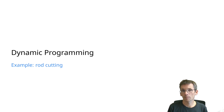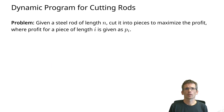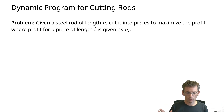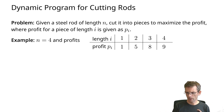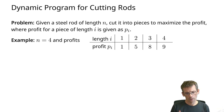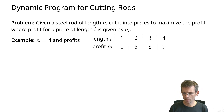I want to show you a simple example for dynamic programming, and that is rod cutting. The problem is: we assume you have a steel rod of a certain integer length n, and you want to cut it into pieces so as to maximize your profit. For that you need to know, for certain lengths, how much profit you get. So here I have information for certain lengths — a piece of length one is worth one, a piece of length two is worth five, and so on.